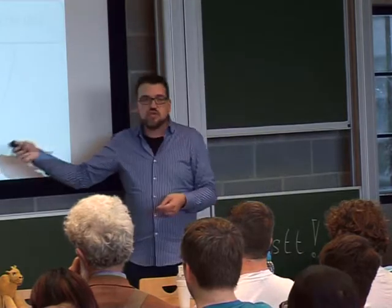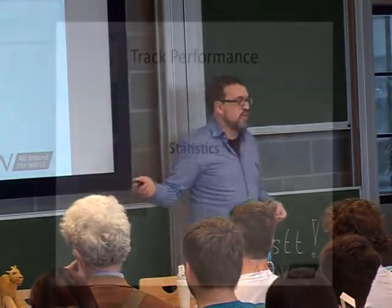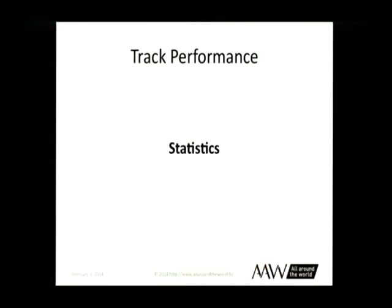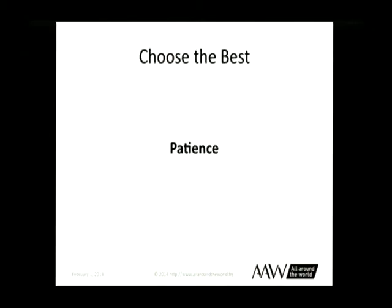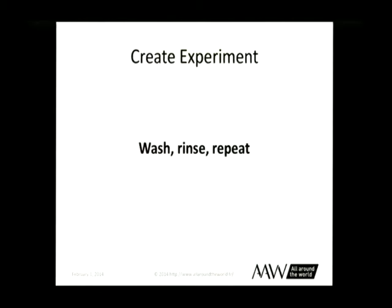You then choose the best afterwards. You create your experiment, roll the dice to see which version they'll see, track their performance over time, and choose which one performs best. Patience is very, very important here. Many people get impatient right at the beginning and screw things up. Then you create a new experiment and wash and repeat — just keep going through this over and over again. At this point you know 99.9% of what everyone else knows about A/B testing, but there's a lot more issues involved.